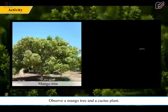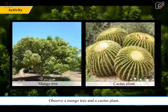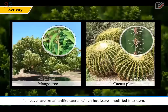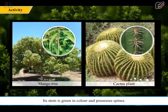Let us do an activity. Observe a mango tree and a cactus plant and compare their leaves and stems. The mango tree has a green stem and its leaves are broad, unlike cactus which has leaves modified into spines. The cactus stem is green in color and possesses spines.